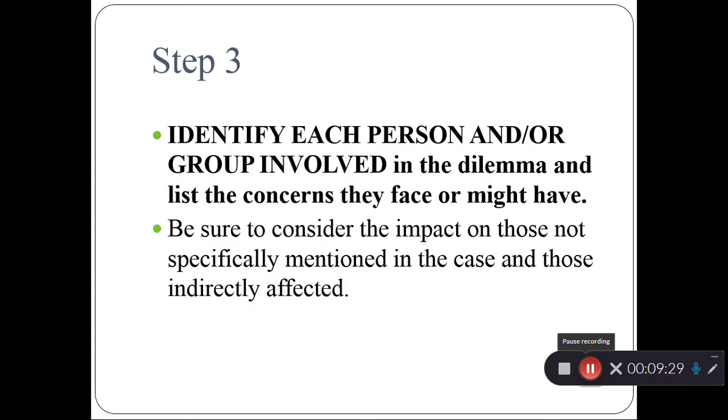Step three, identify each person or group involved in the dilemma. And some of these considerations came up in the last step. Who's being hurt by our failure to buy a ticket? Who's not getting paid? Who would be impacted if we got caught, got in trouble? Would this be escalated to a legal problem? Would that impact my job, my family? So you can think of an expansive list of the people who would be impacted by any decision you make in this case.